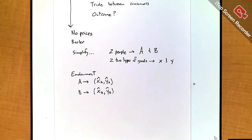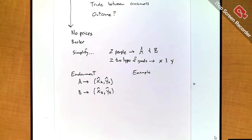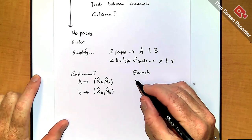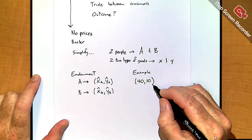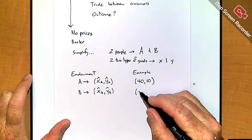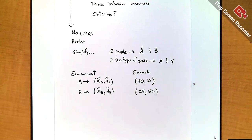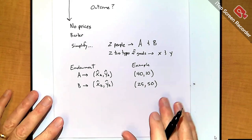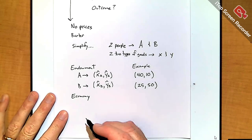Let me put an example right next to it so we have numbers. Say A has 40 units of X and 10 units of Y, and B has 25 units of X and 50 units of Y. We can go from household to household and document how much of each good they have — pretty easy in this economy because I only have two households — and calculate the total amount of X and Y available.